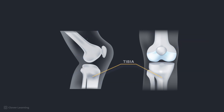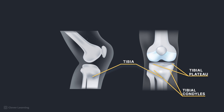We also need to review some anatomy of the tibia: tibial condyles, the medial and lateral processes at the proximal end of the tibia; tibial plateaus, the superior surfaces of the tibial condyles, which are smooth facets that articulate with the condyles of the femur; and the intercondylar eminence, a sharp projection between the tibial plateaus.